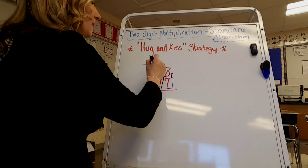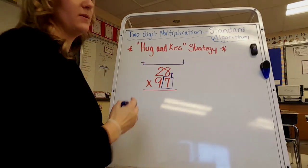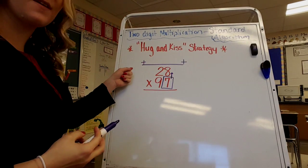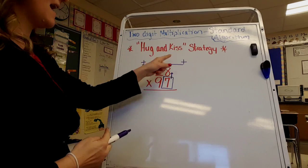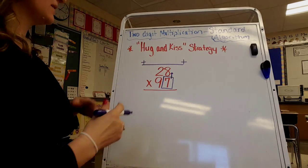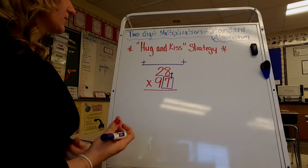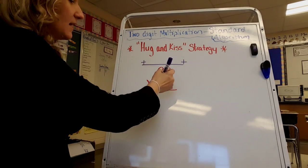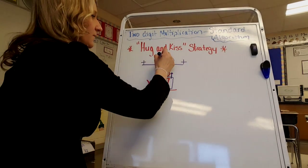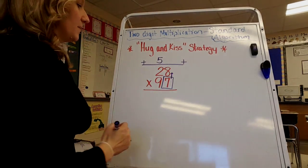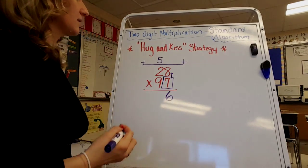Now, always remember — and if you need to, you can draw that line right on the top — always remember that we have to add anything that's up on the top that is composed, any of the numbers that are composed. So 8 times 7 is 56. I bring the 5 up above and the 6 down below.